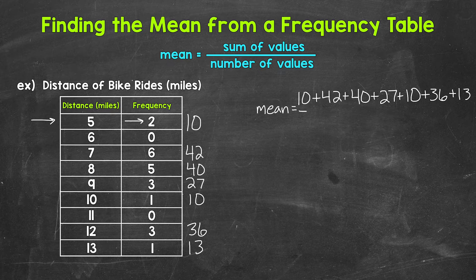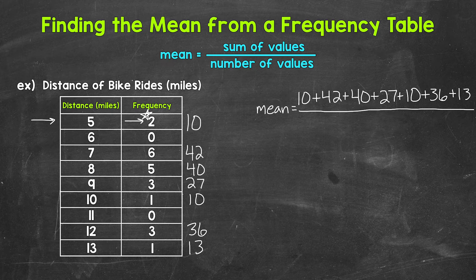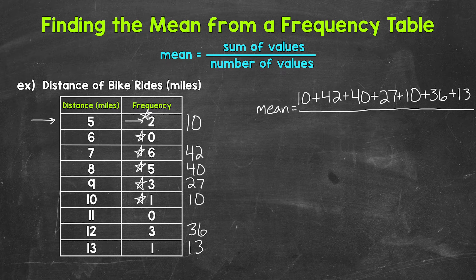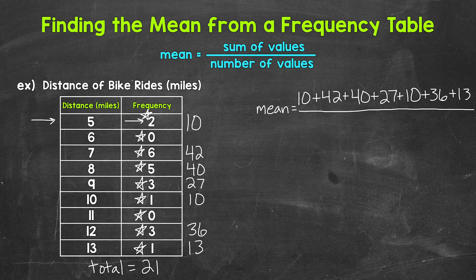Then we divide that by the number of values we have. We can look at the frequency column to figure out the number of values. Five miles occurred twice, so we have two values there. We don't have anything for six, so two plus zero is two. Then seven miles occurred six times — two plus six is eight. Plus five is 13. Plus three is 16. Plus one is 17. Plus zero, we still have 17. Plus three is 20. Plus one is 21. So our total number of values is 21.